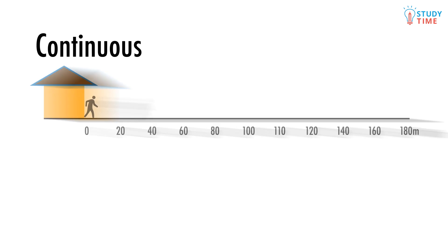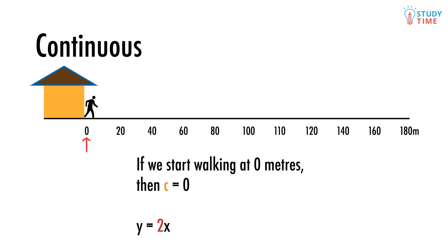So how can we tell c from our walking data? Well, c would be our starting point—how far away we are at 0 seconds. Let's say the point we measure the distance from was our house, and we started walking from the house. Then we started at 0 meters and c just equals zero.